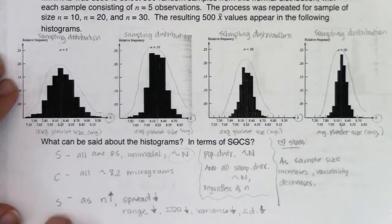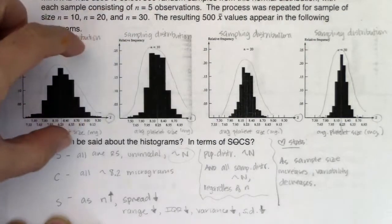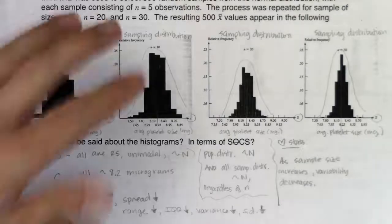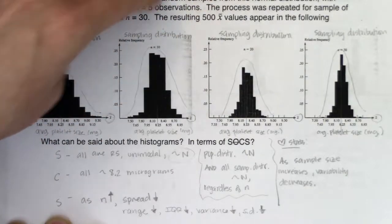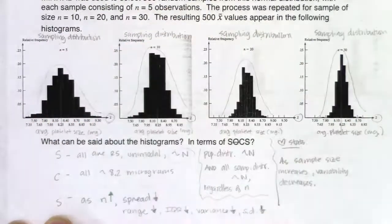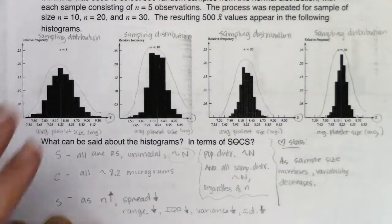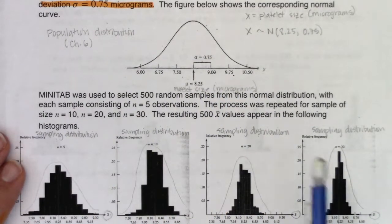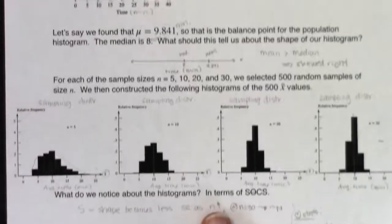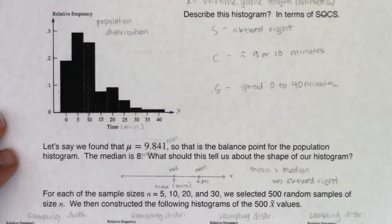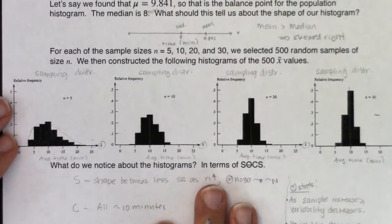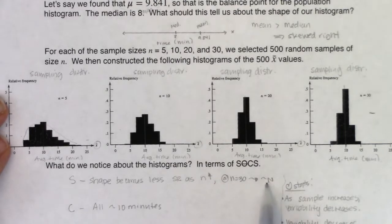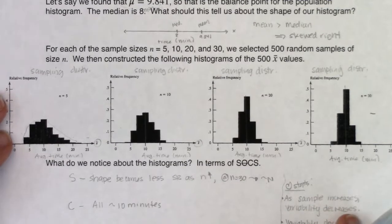So one last summary: whatever the center of your population distribution, you're going to see that center in your sampling distributions. Regardless of what happens in your population distribution, as sample size increases, variability will decrease. The shape is where things differ: if you start with a normal population distribution, you get normality regardless of sample size. If you start with a distribution that is not normal — like this skewed right one — you don't get normality right away. We'll pick up on the next page: when do you officially get to say 'approximately normal'? We'll catch you in the next example.